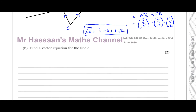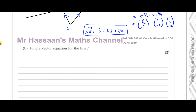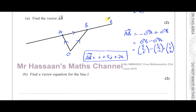Part B says find a vector equation for the line L. The vector equation is: r equals the position vector of any point on the line, plus some scalar lambda times the direction of the line. The scalar term represents the direction and the other term represents a point on the line.